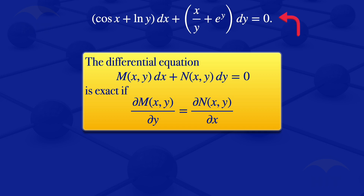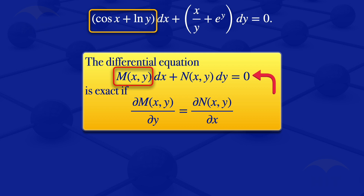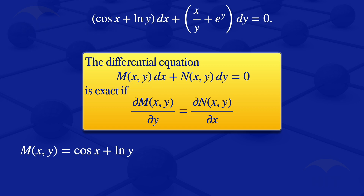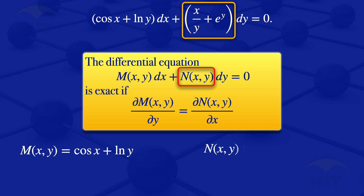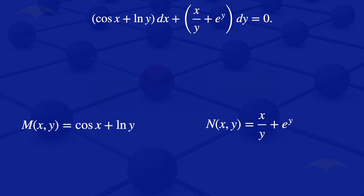In the equation we have, the coefficient of dx is cosine of x plus ln of y, so by comparison M(x,y) equals cosine of x plus ln of y. The coefficient of dy is x divided by y plus e^y, so N(x,y) equals x divided by y plus e^y. We now have our M and our N.